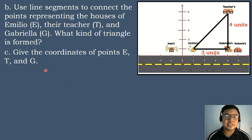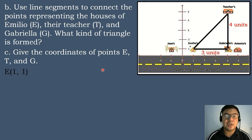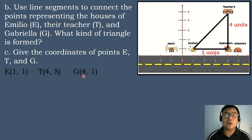Give the coordinates of points E, T, and G. The coordinates of point E are (1, 1). The coordinates of point T are (4, 5). And the coordinates of point G are (4, 1).